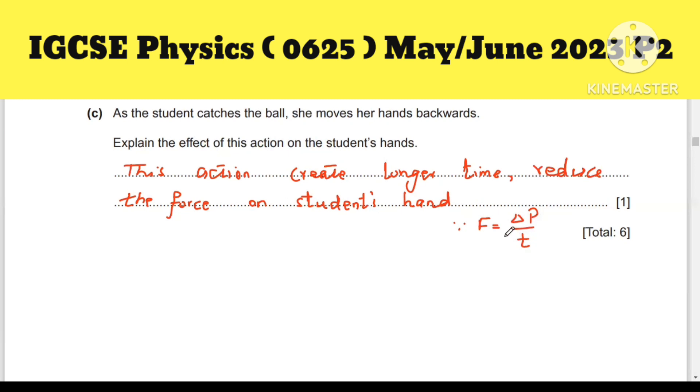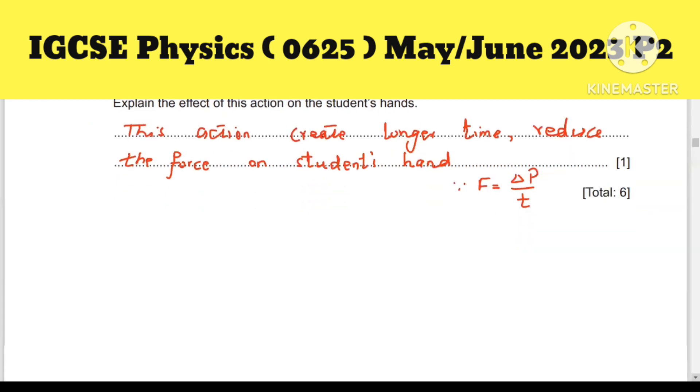When she moves her hand backward, there are two reasons due to this formula: F = Δp / Δt, which means change in momentum per unit time.